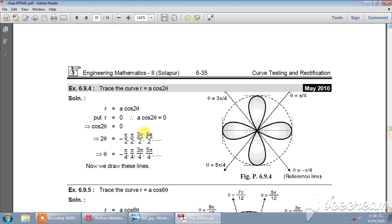One more example: r is equal to a cos 2 theta. So you can check it out, r is equal to a cos theta will be symmetrical about the initial line. So you can write symmetry about initial line.